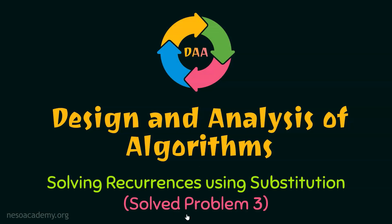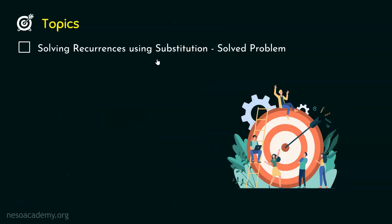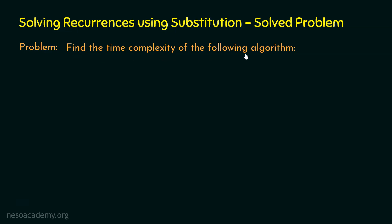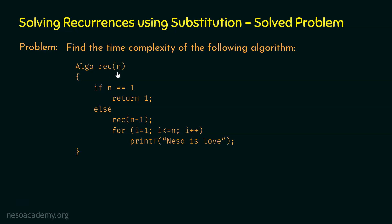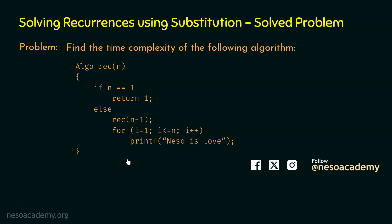Let's solve problem number 3 on recurrences using the substitution method. We need to find the time complexity of the algorithm REC(N). This is a recursive algorithm because REC(N) calls itself — specifically calling REC(N-1). We already know how to find the time complexity of a recursive algorithm: write the recurrence relation of time and solve it using the substitution method, which will give us the time complexity.